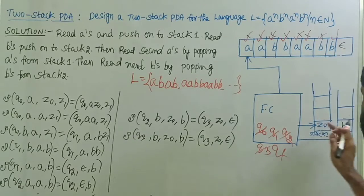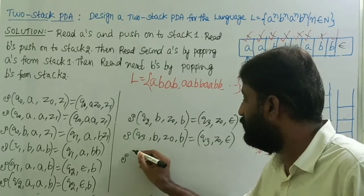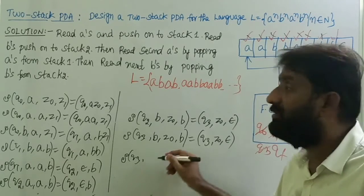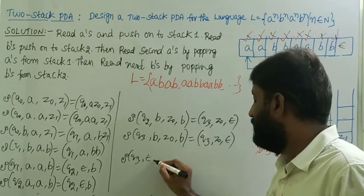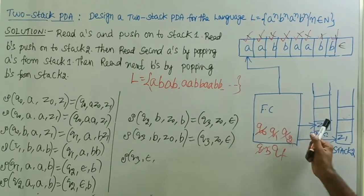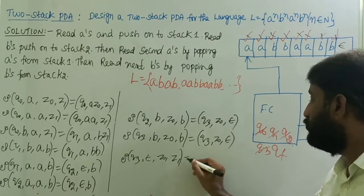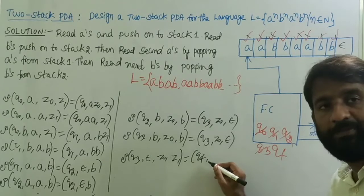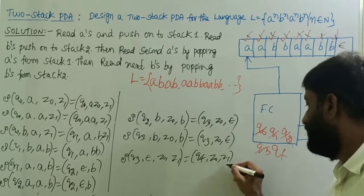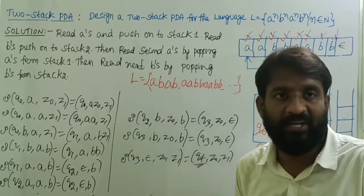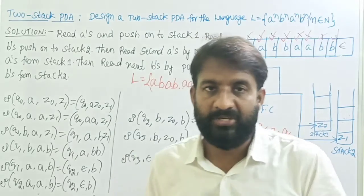Now assume all b's are completed. We are in state q3. The input is now epsilon. Top of stack one is z0, top of stack two is z1. Move to the final state without doing any operation on stack one or stack two. So qf is the final state — this is acceptance by final state.